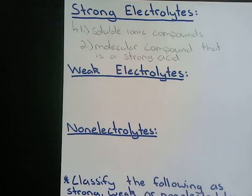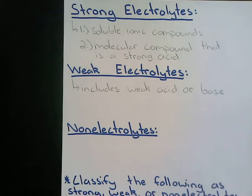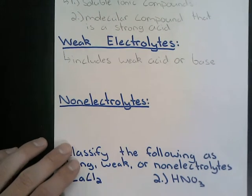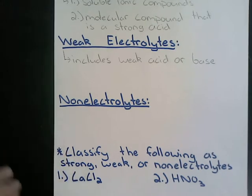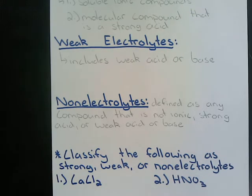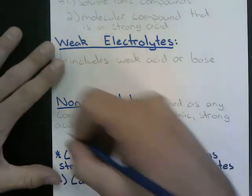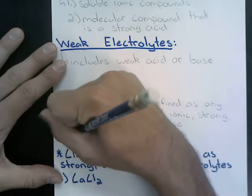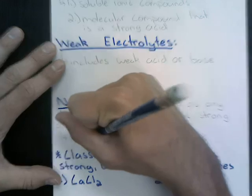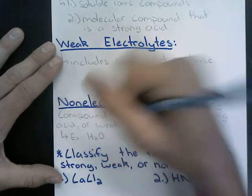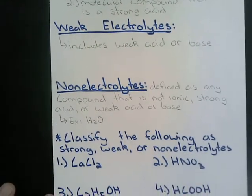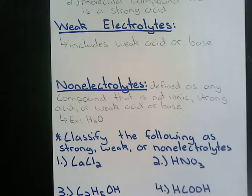A weak electrolyte is anything that is a weak acid or base. A non-electrolyte is any compound that is not ionic, a strong acid, or a weak acid or base. A good example of a non-electrolyte would be water, H2O. To help identify whether something is strong, weak, or a non-electrolyte, we can look at some compounds.